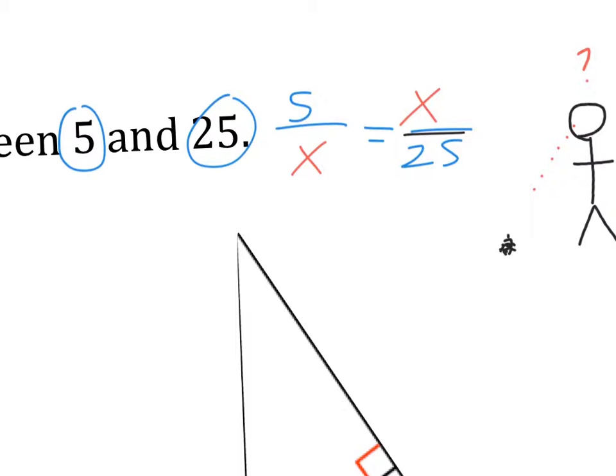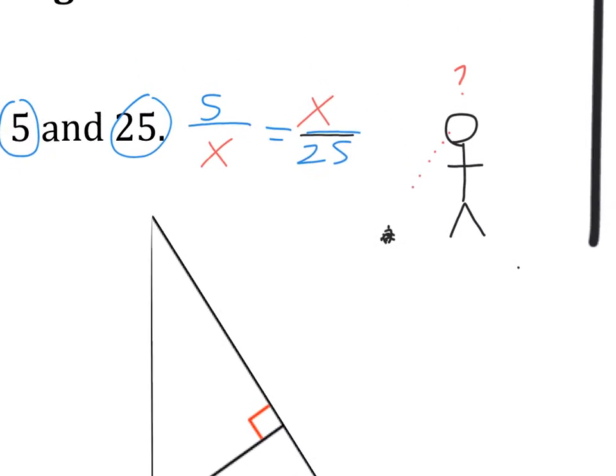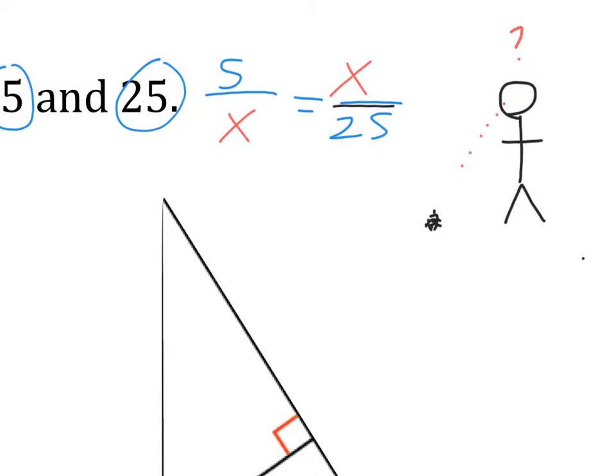So that's the setup. Anytime you're asked to find the geometric mean, your variable gets squared. So 5 compared to my geometric mean is my geometric mean compared to 25. So quickly, you know that if you had to estimate it, you would say anywhere from 10 to 15, probably 10 to 15. But we don't know exactly offhand, so we have to do some calculations. So cross-multiply, x squared, and 5 times 25 is 125.